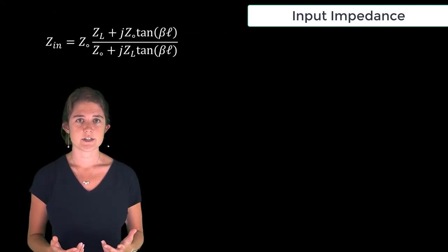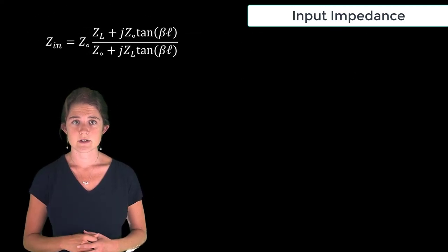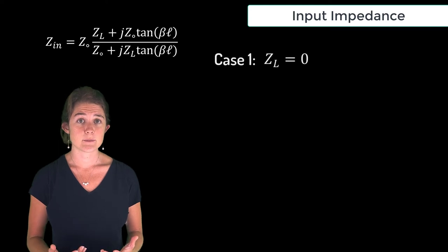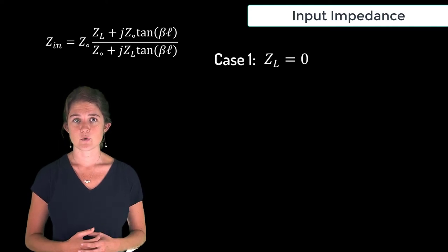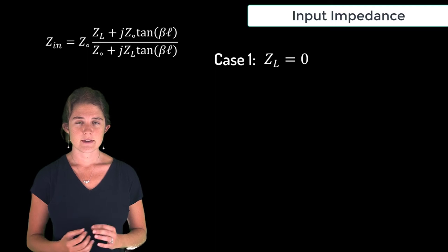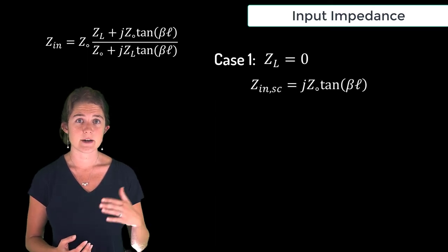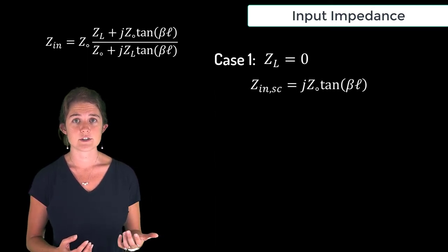Let's look at the input impedance equation in two special cases. First, what if the line is terminated with a short circuit? What if the load impedance is zero? In this case ZN simplifies to JZ0 tangent beta L.